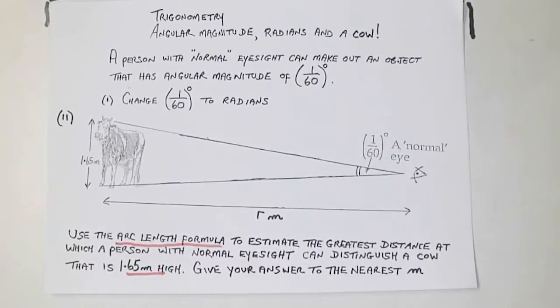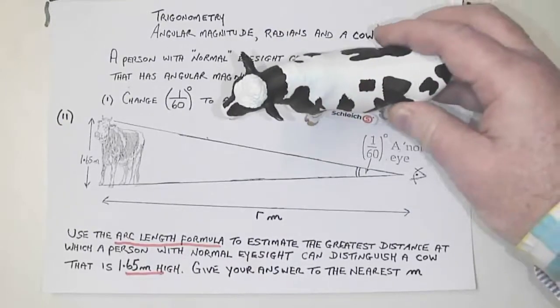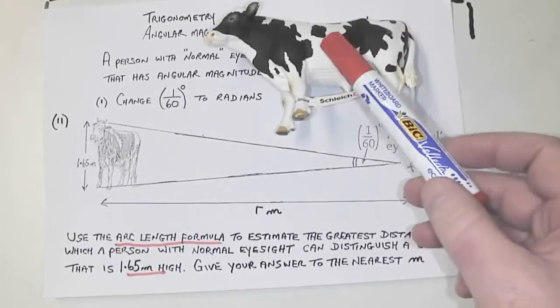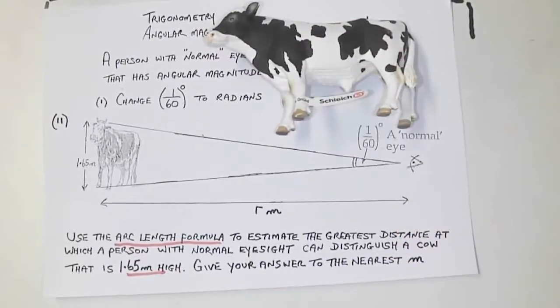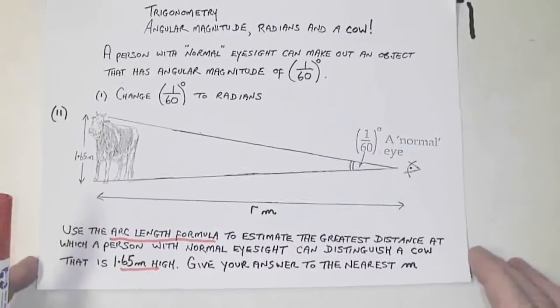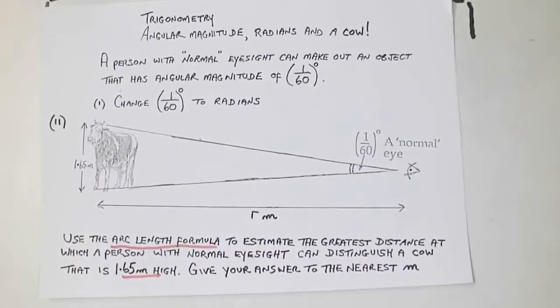As a fan of Father Ted, I can say there's a famous clip where Ted is trying to explain to Dougal, this cow is small, but this cow is far away. It's a joke I just liked, so I thought I'd share it with you.